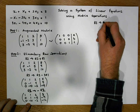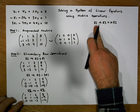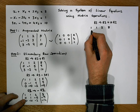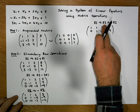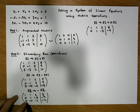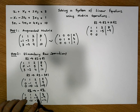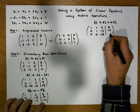Row 3 becomes row 3 plus 10 times row 2. Rows 1 and 2 remain the same: 1,1,2,8 and 0,1,-5,-9. Row 3 is updated: 0+10×0=0, -10+10×1=0, -2+10×(-5)=-2-50=-52, and -14+10×(-9)=-14-90=-104. So row 3 becomes 0, 0, -52, -104.